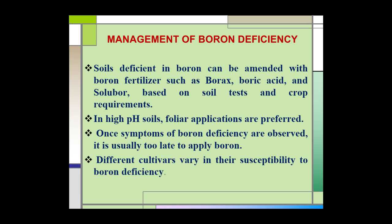Management of boron deficiency. Soils deficient in boron can be amended with boron fertilizers such as borax, boric acid, and solubor, based on soil test results and crop requirements. In high pH soil, foliar applications of boron are preferred. Once symptoms of boron deficiency are observed, it is usually too late to apply boron. Different cultivars vary in their susceptibility to boron deficiency.